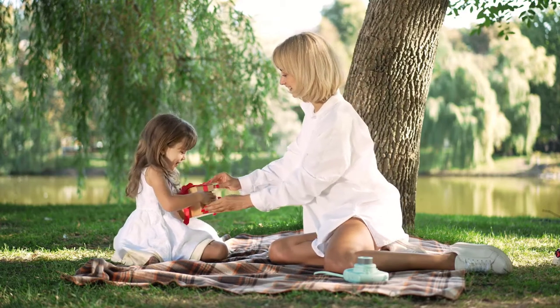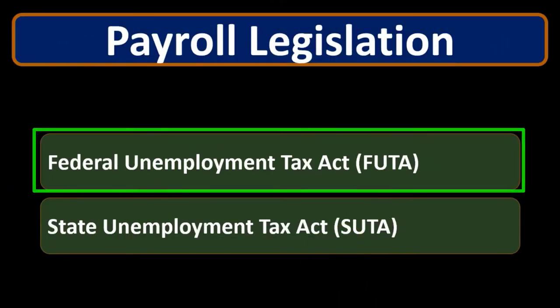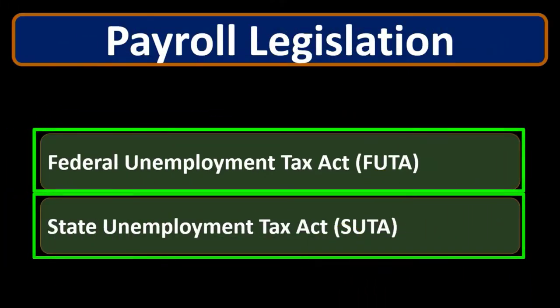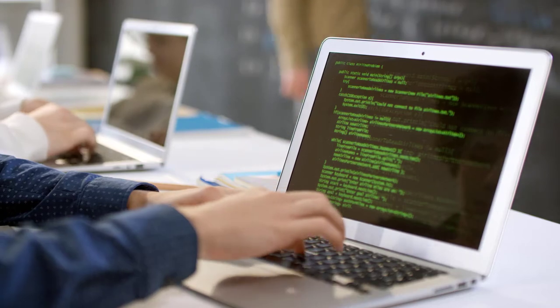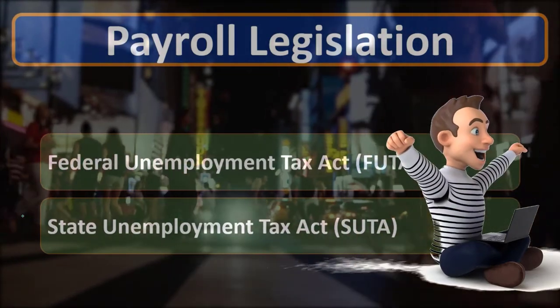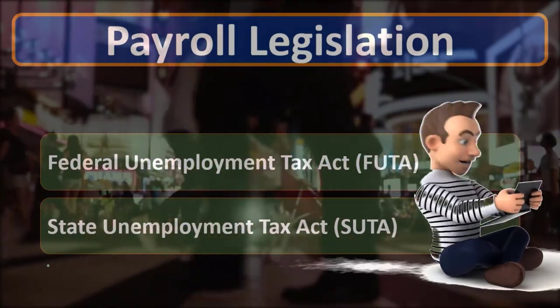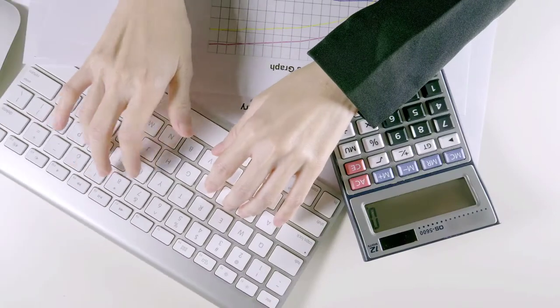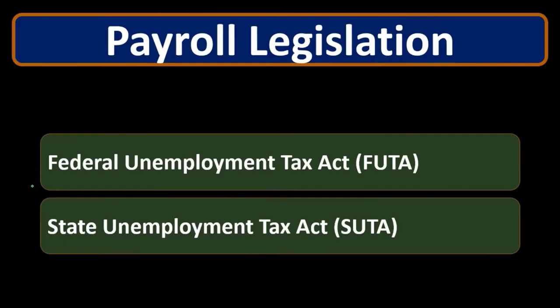Note that the payments given to unemployed workers are typically given from SUTA, while FUTA is generally used to pay for the administrative function of the program. We're talking about both state and federal unemployment because they are related. When the legislation passed for the Federal Unemployment Tax Act, it passed in a way that required states to pass their own tax.